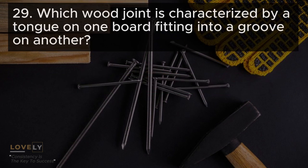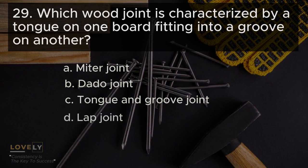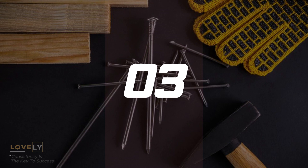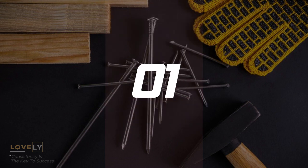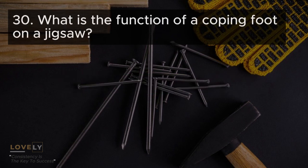Question 29: Which wood joint is characterized by a tongue on one board fitting into a groove on another? A. Miter joint B. Dado joint C. Tongue and groove joint D. Lap joint. Answer C. Tongue and groove joint.